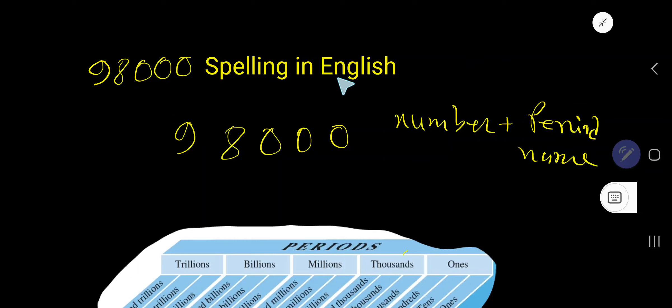98000 - spelling in English. To spell this number, we have to have knowledge about periods. Three digits make a period. The name of the first period is ones period. The second period name is thousands period.